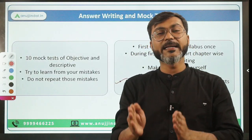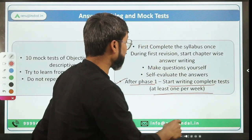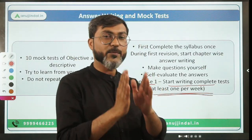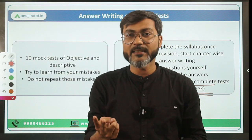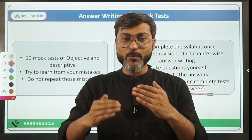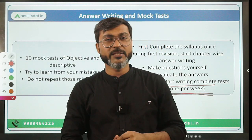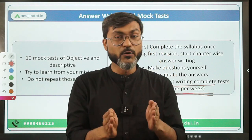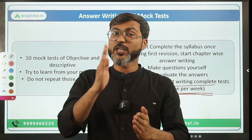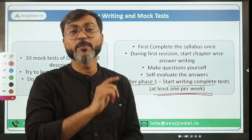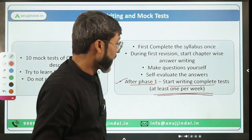After Phase 1 is completed, start writing complete tests. At that point, writing one or two questions won't be enough - you have to write a complete test in the given time of one and a half hours, attempting four questions. Try to write at least one test per week so you get examination practice. You'll be typing your answers, so you need to know how much time to allocate per question. There are two types of questions: 15 markers and 10 markers.